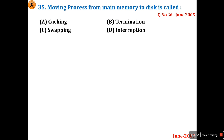Question 35: moving a process from main memory to disk is called — is it caching, termination, swapping, or interpretation? You can easily answer this: it is swapping.